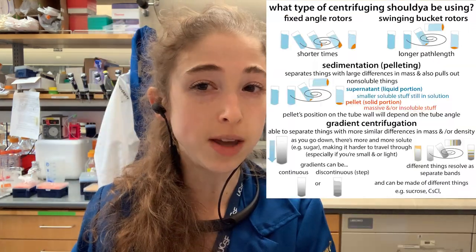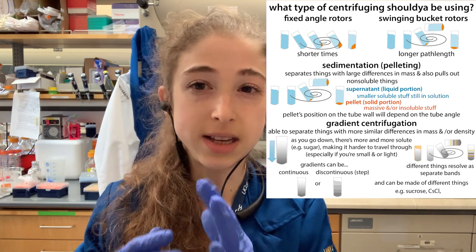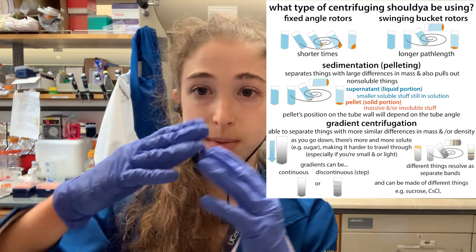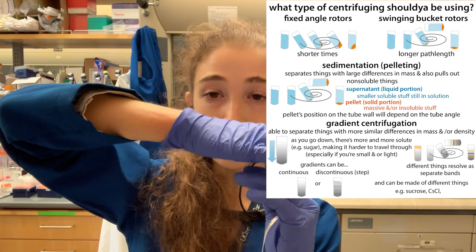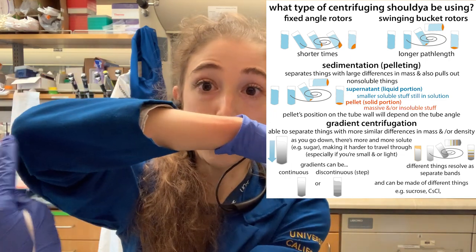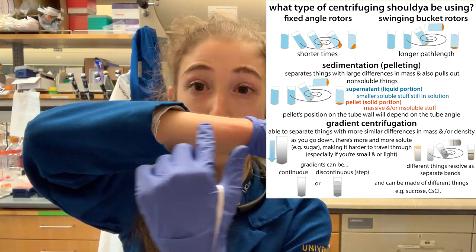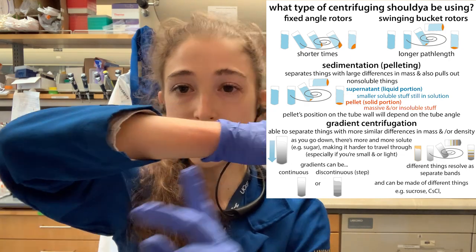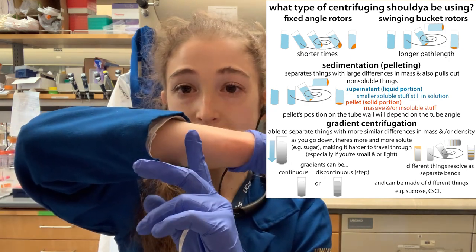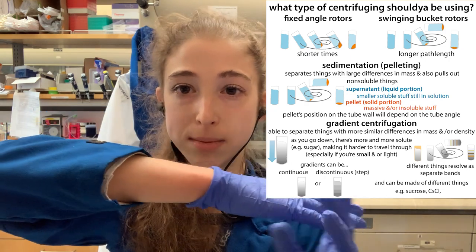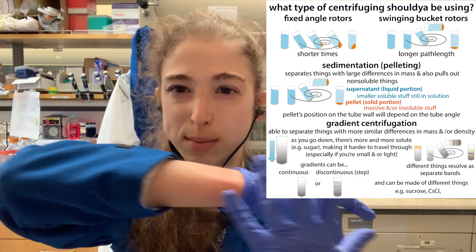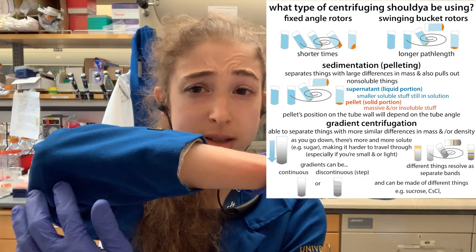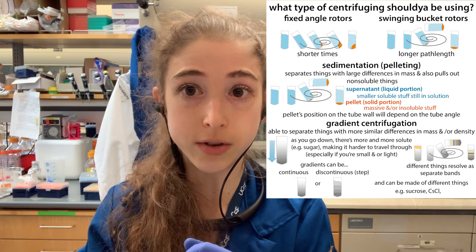When it comes to swinging bucket rotors, you'll often see the maximum force listed. That's because your tube is horizontal, and you're going to have a different force felt throughout the tube — the maximum force is at the bottom, the minimum near the top, and the average is somewhere between the two. Typically it's given in terms of the max when doing conversions.